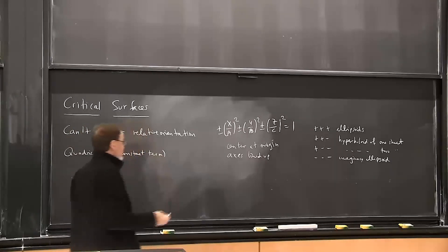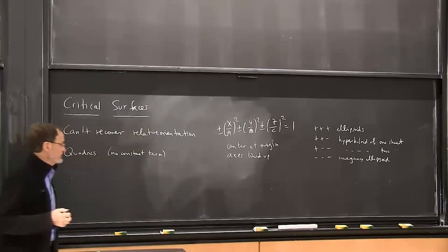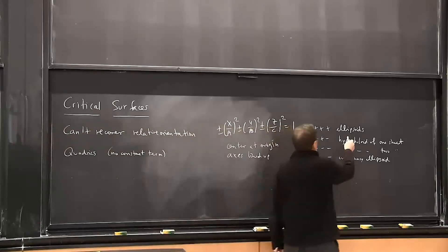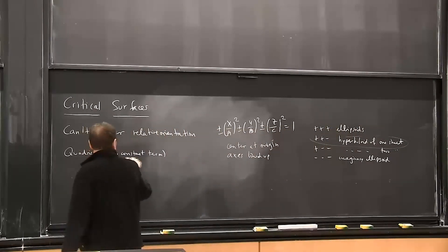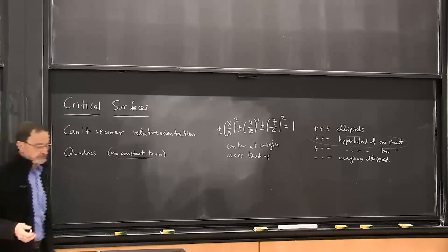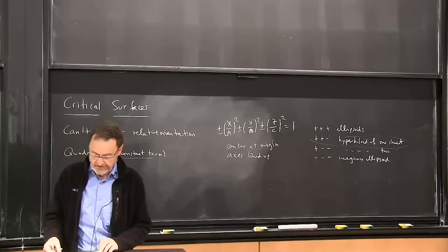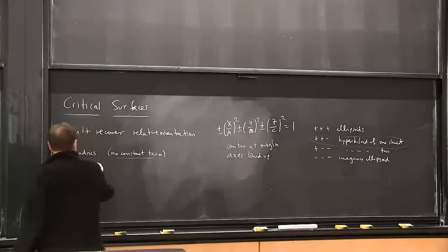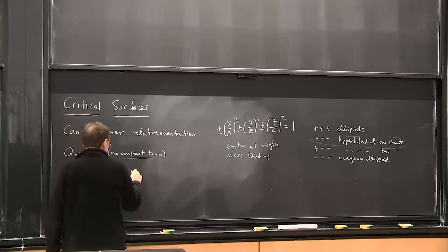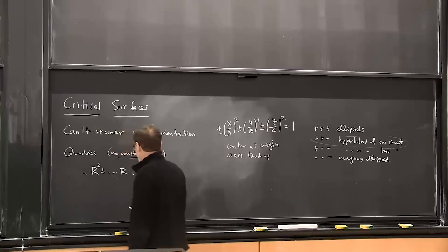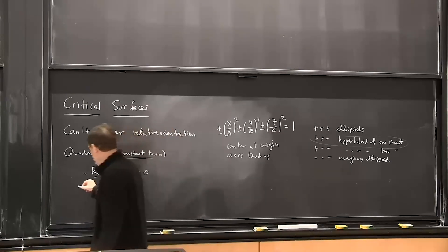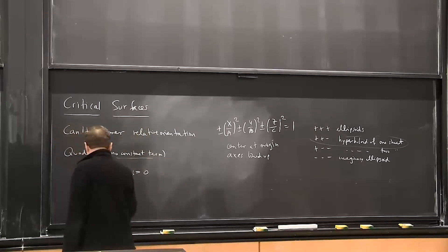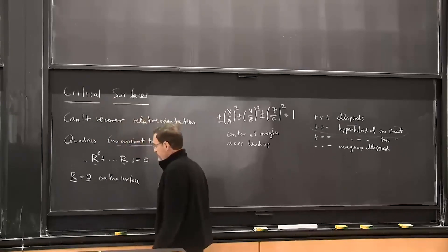If we extend to complex numbers, we can talk about an imaginary ellipsoid. The particular equation we got from the problem of relative orientation fell in this category. The way we can get there is to note that it didn't have a constant term — it was second order with only the second order term and the first order term.